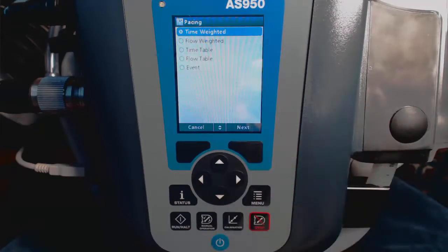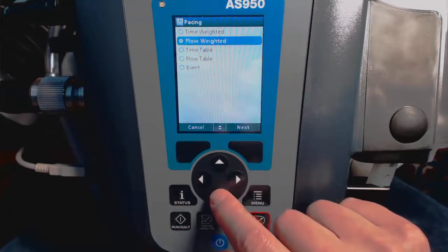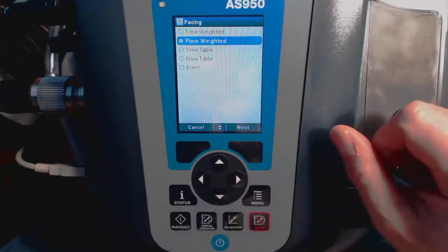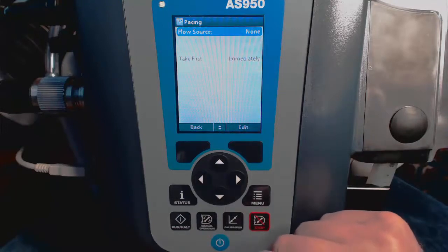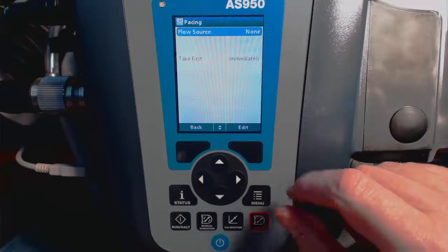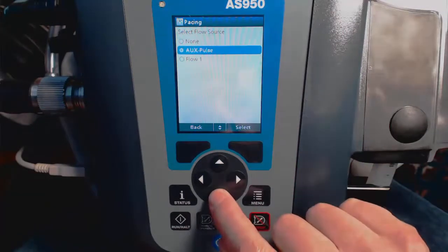So we're doing flow proportional, so we want to choose a flow-weighted sample. We choose flow-weighted and press select. Now we'll need to choose our flow source. In this case, we've set up the AV9000, so we'll select here and choose flow 1.